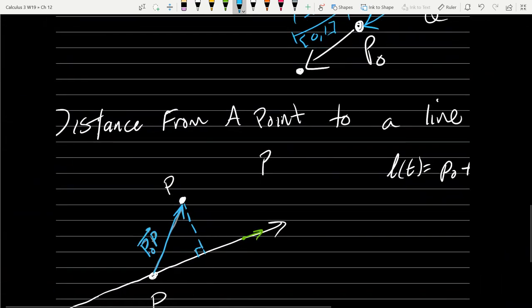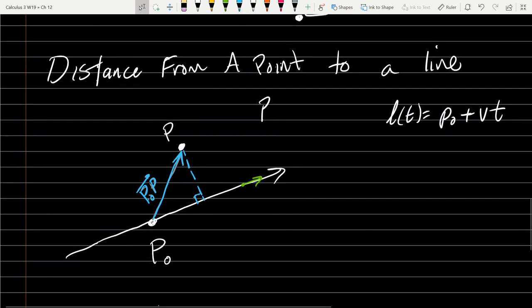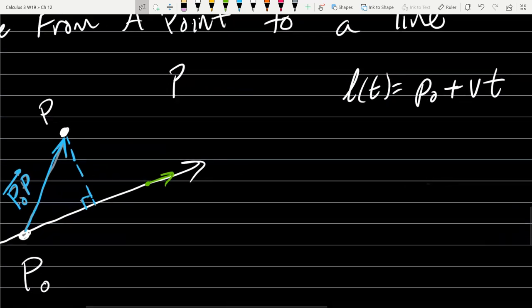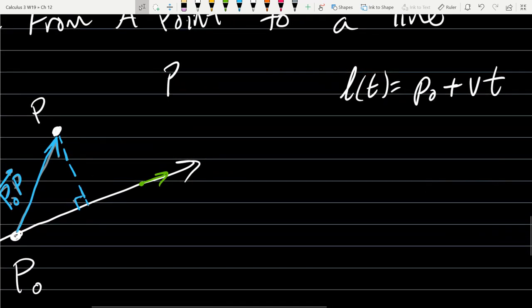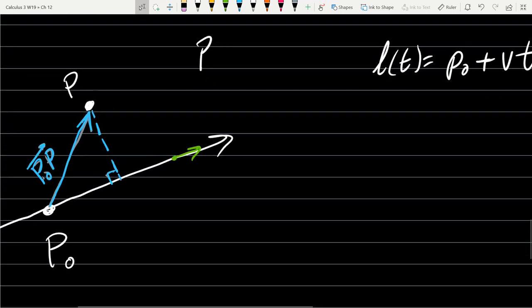We're going to look at the distance from a point to a line. Our point is going to be called P, and our line is L(T). Our line equation is written as P₀ + VT, where V is the slope of the line.